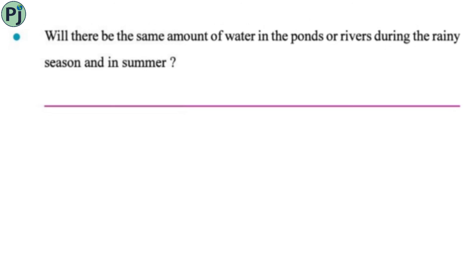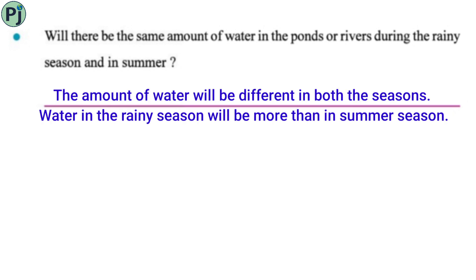Will there be the same amount of water in the ponds or rivers during the rainy season and in summer? No, the amount of water will be different in both seasons. Water in the rainy season will be more than in summer, because rainfall increases water levels in rivers and ponds.